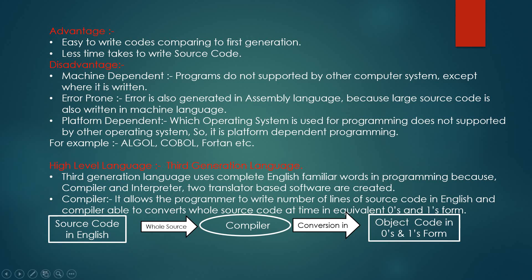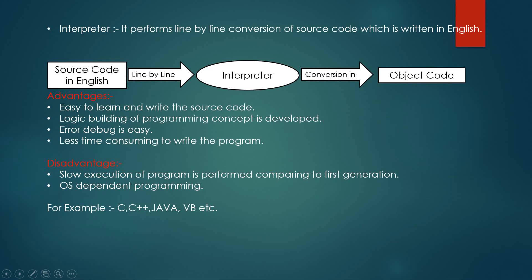The compiler allows the programmer to convert the whole source code — the completely English source code — all at once into zeros and ones form. As shown in the diagram, the whole source code in English is compiled by the compiler and converted into object code, that is zeros and ones. The interpreter performs line-by-line conversion of the source code written in English. As shown in the diagram, source code in English is converted line by line by the interpreter, finally obtaining the object code.